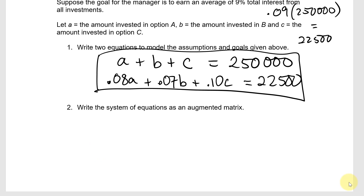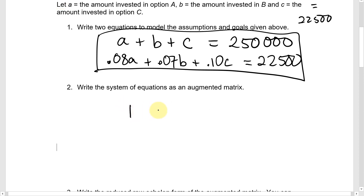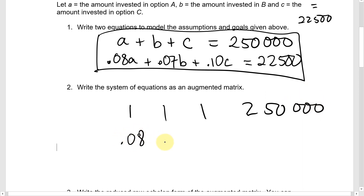Question 2 says: write the system of equations as an augmented matrix. Turning that into a matrix, the first row is 1, 1, 1 | 250,000 and the second row is 0.08, 0.07, 0.10 | 22,500.